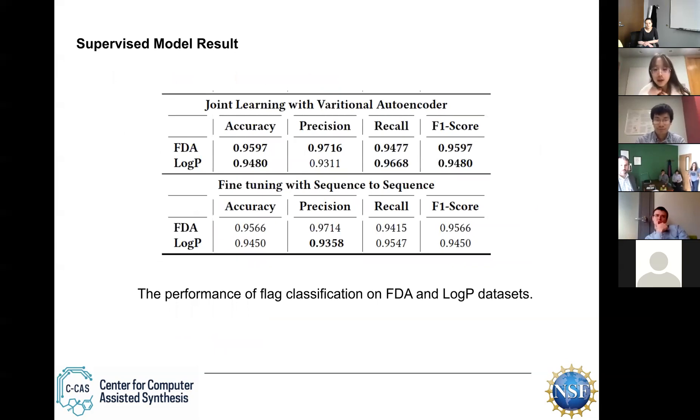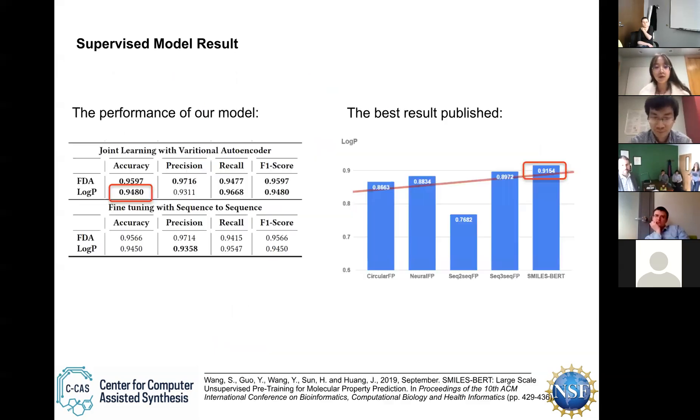And use this loss function to train this model. And the result is like this. I also use the same function with sequence to sequence to get the results. Both of these are supervised models. And we can see the results have improved. And we also can compare the performance of all our models and the best results published for this work. You can see the red graph. The sequence to sequence is unsupervised model. But for sequence to sequence and this model, both are supervised models. And you can see my results have improved about 3%.